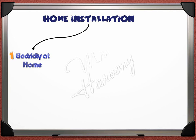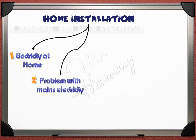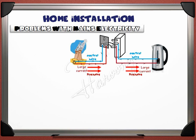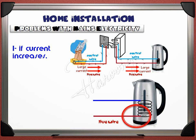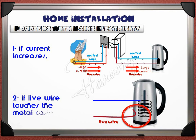This way of supplying homes with electricity comes with two main problems. The first one is that sometimes the current from the power station increases, which may cause the kettle to be damaged and the wires to heat up and melt. If we look inside our kettle, we will see that it is mainly made of a heating coil. This coil is connected to the brown live wire and the blue neutral wire. Sometimes by mistake the live wire may be loose and touch the metal casing, and touching the metal casing may cause an electric shock — Problem number two.